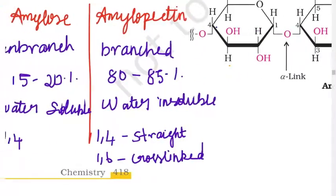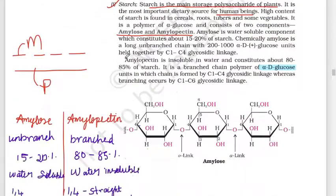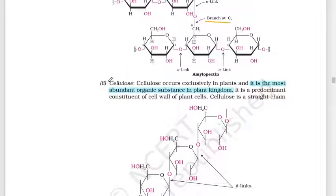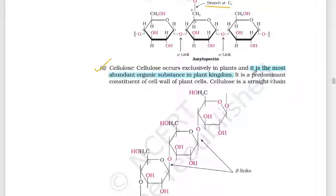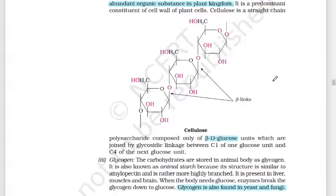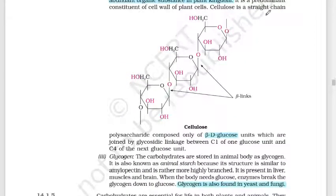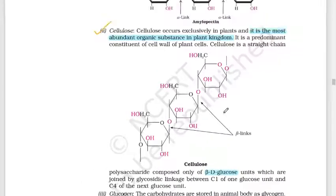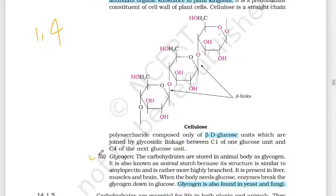The next polysaccharide is cellulose. Cellulose is found in plants and is the most abundant organic substance in the plant kingdom. It is the predominant component of the plant cell wall. Cellulose is a straight-chain polysaccharide composed of only beta-D-glucose units joined by 1,4 glycosidic linkage between carbon-1 of one glucose unit and carbon-4 of the next.